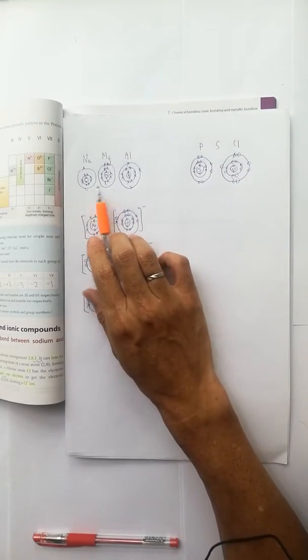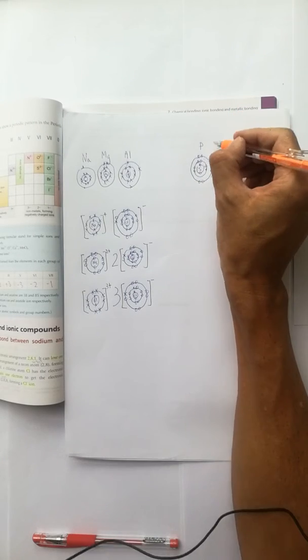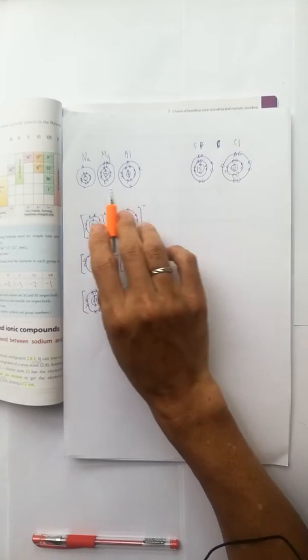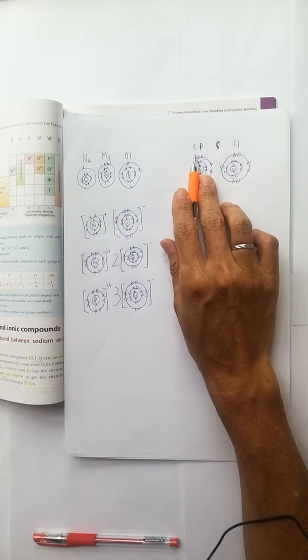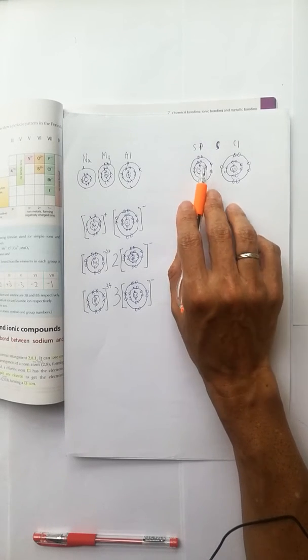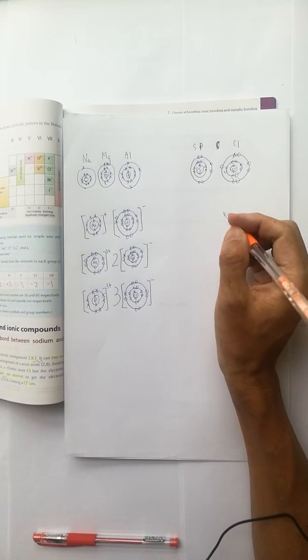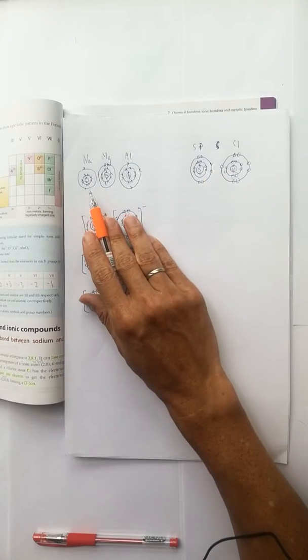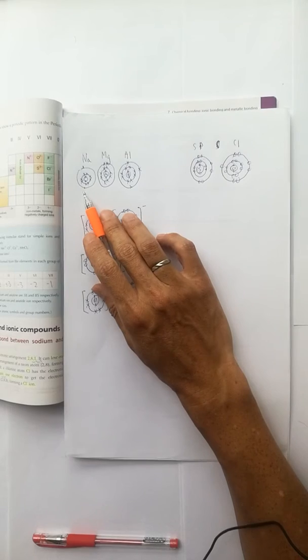When you consider sodium and sulfur, one sodium loses one electron and one sulfur wants to have two electrons to become an octet. So for each sulfur we need to have two sodium atoms.